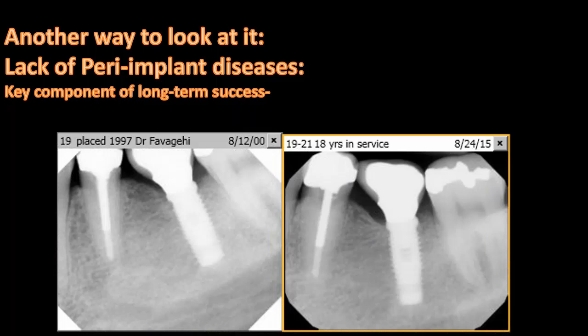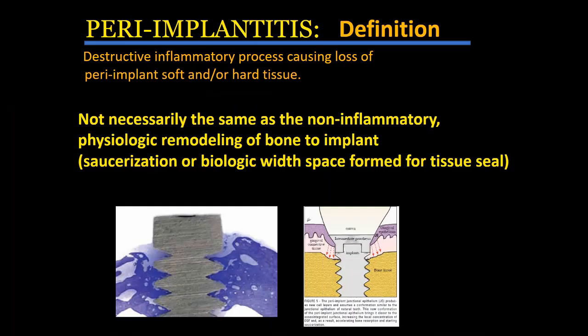This is a good reminder that the absence of peri-implantitis is an indication of long-term success in implantology. It's also a good indication that we should maybe de-emphasize the materials and techniques we use, and look at other factors that maintain bone — because in this case I used obsolete technique and material and still had good results.